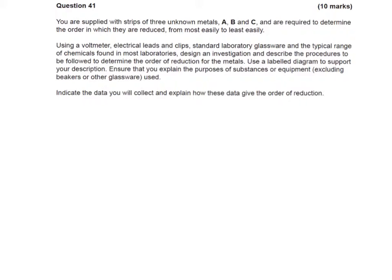Now, we're presented with three unknown metals A, B and C, and we're told that we've got to determine the order in which they are reduced. So we don't know where they actually are on the standard reduction potential table, but that's what we've got to identify.